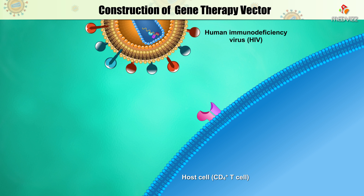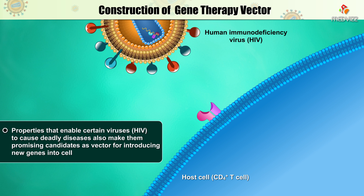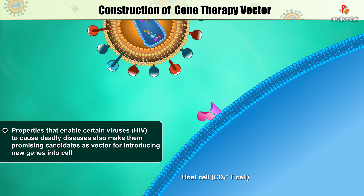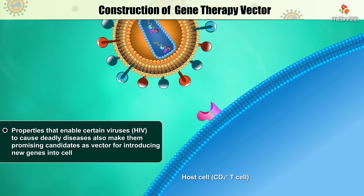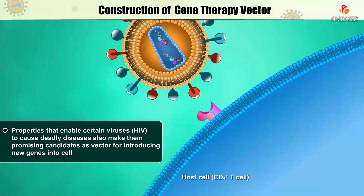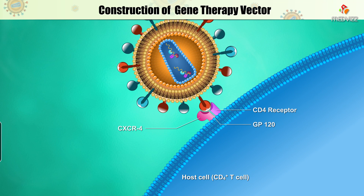It may seem surprising that the properties that enable certain viruses, such as HIV, the cause of AIDS, to cause deadly diseases also make them promising candidates as vectors for introducing new genes into cells.